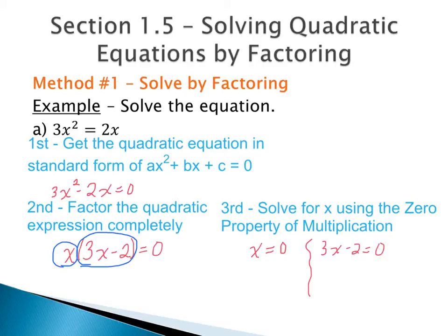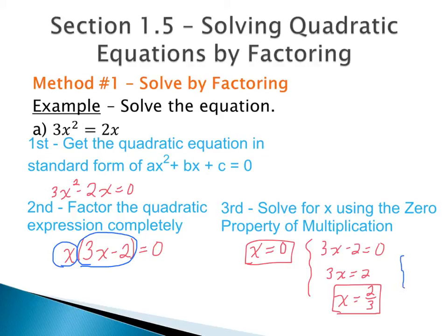That means we have x equal to zero — which is already solved — and then our second factor gives us 3x minus 2 equals zero. Moving the 2 over, we have 3x equals 2, and then dividing by 3, we get x equals 2 thirds. So we have two answers: x equals zero and x equals 2 thirds. As a solution set, we can write this as {0, 2/3}. Both values, when plugged into the original equation, make both sides equal.